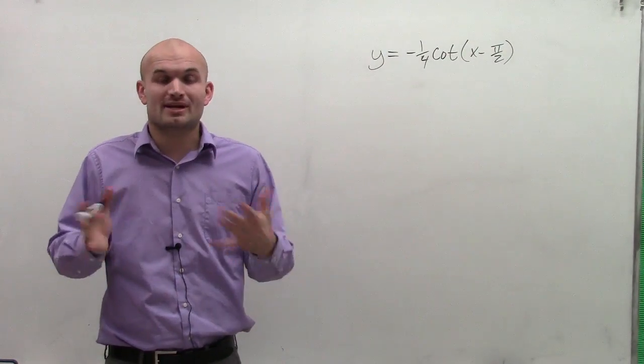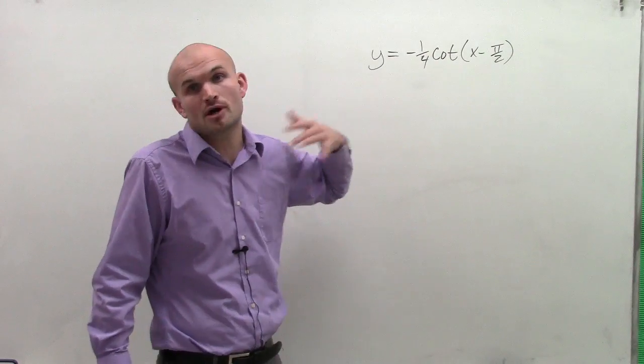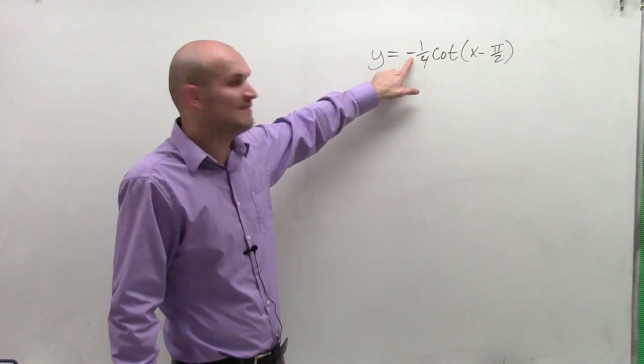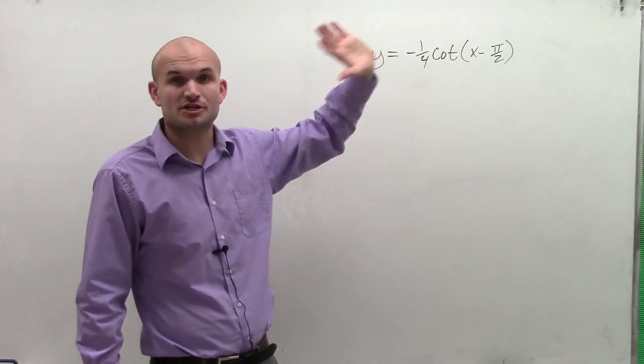Now, we notice that we're going to have some transformations here. We're going to have some alterations to our original graph. First of all, we have a negative, which is going to be a reflection about our x-axis.